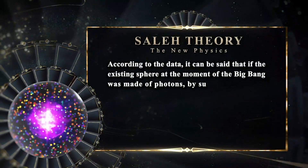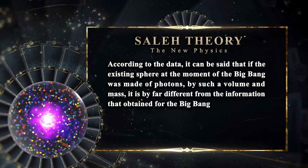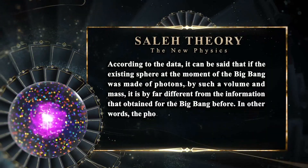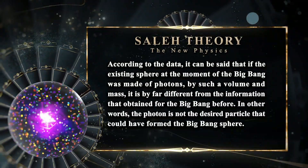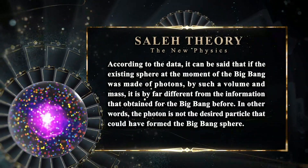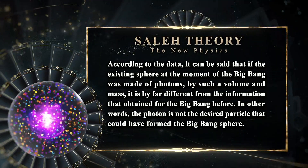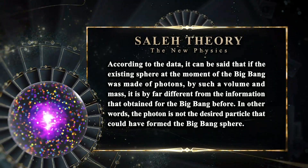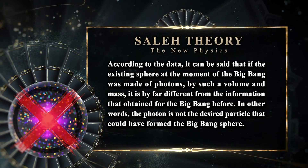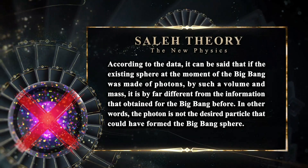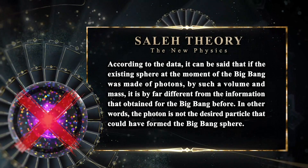According to the data, it can be said that if the existing sphere at the moment of the Big Bang was made of photons, by such a volume and mass it is by far different from the information obtained for the Big Bang before. In other words, the photon is not the desired particle that could have formed the Big Bang sphere.